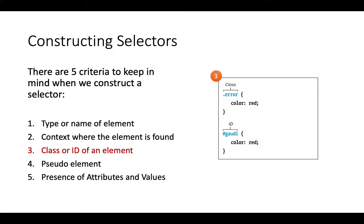A class is used when you have multiple elements on the same page, and an ID is used just once. That's exactly right. A class means you want to assign it to more than one element — for example, certain paragraphs you want all to be blue. You assign them to a class, and they all share the same formatting. For ID, it's the opposite: you assign it to only one element on a single page. It's like your name — you want it to be unique.